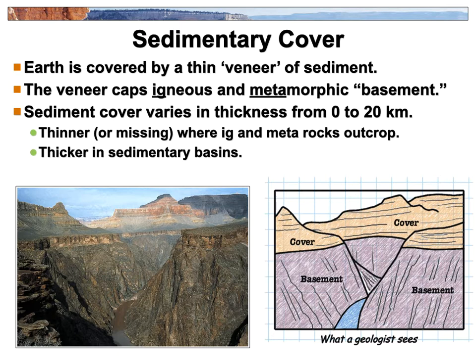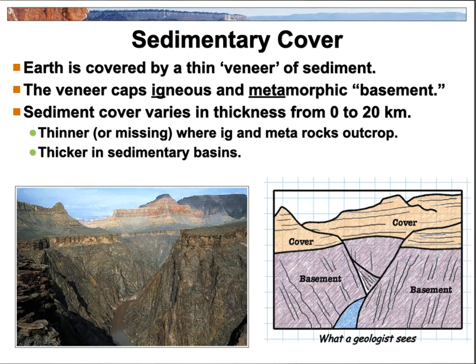In places like the Grand Canyon, you can start walking from the top through layer upon layer of ancient ocean and sand dunes, all the way down until you hit the Vishnu Schist at the bottom, which is a metamorphic rock. It's been heated, cooked, mushed — it's ancient, billions of years old. That's the basement, and we can see that in various parts of the earth, especially in the canyon.